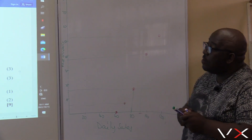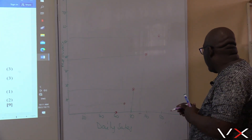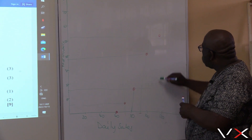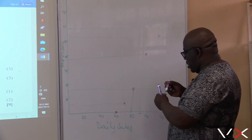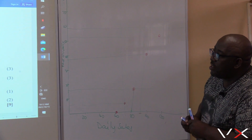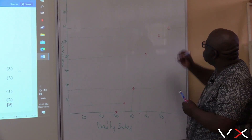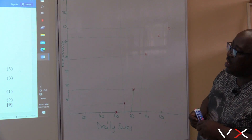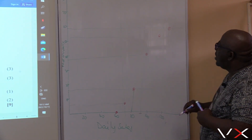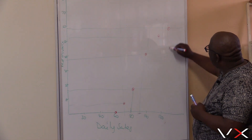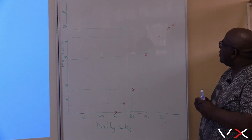The next point after (100, 51) is 110 and 58. 110 will be somewhere here, and 58 is close to 60, so it will be somewhere there — that's 110 and 58. The last one is 120 and 61 — it's just above 120 and 60. 60 is here, so it will be somewhere there. This is my Ogive — all the points have been plotted.